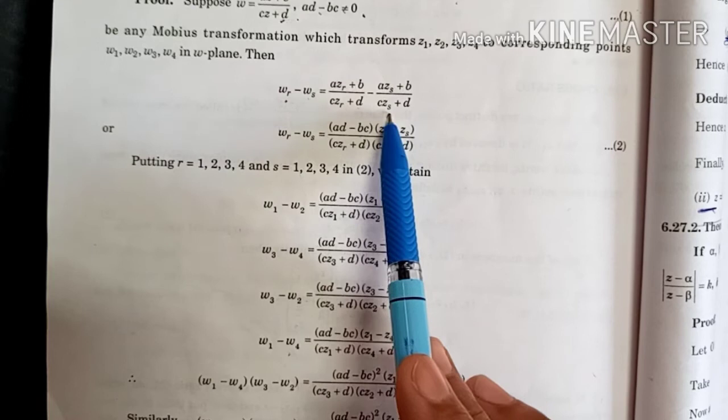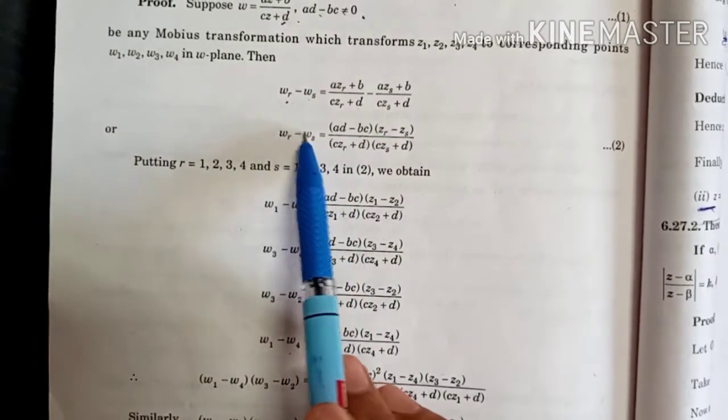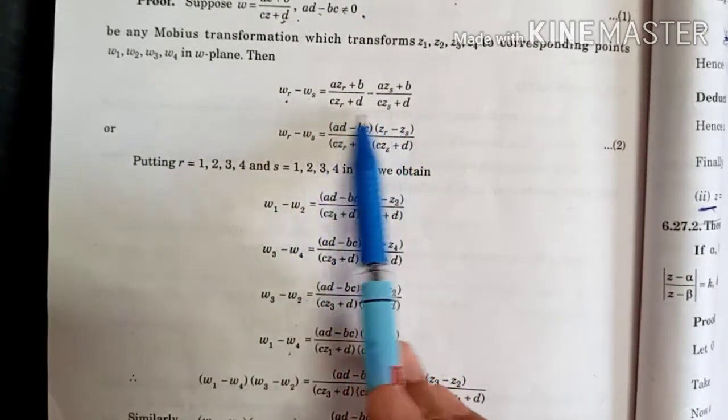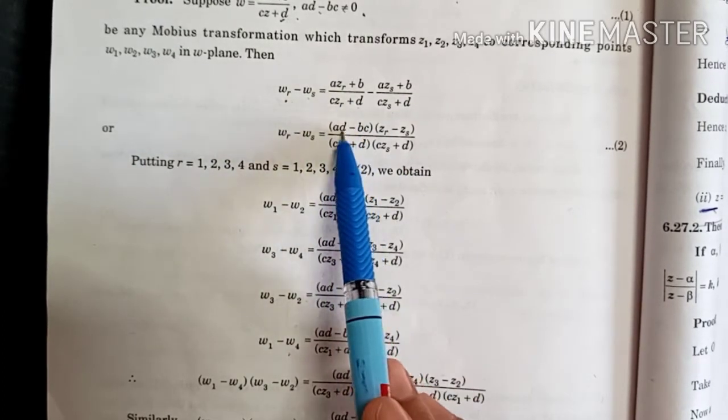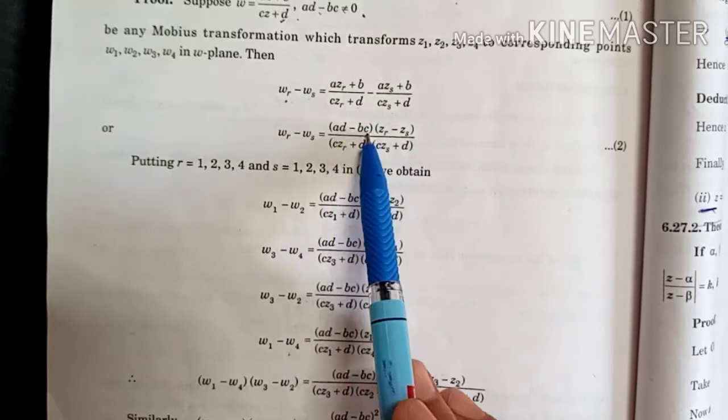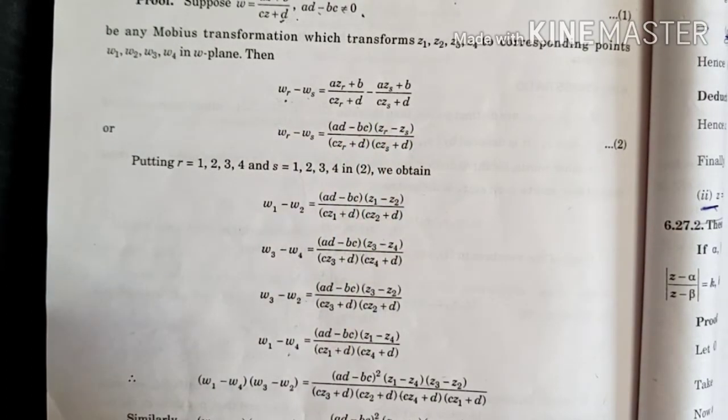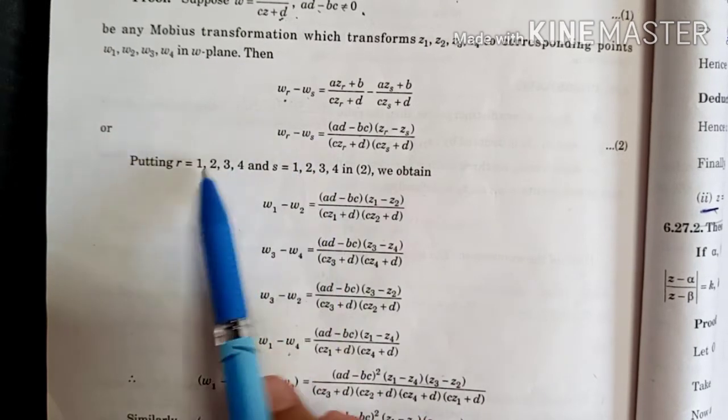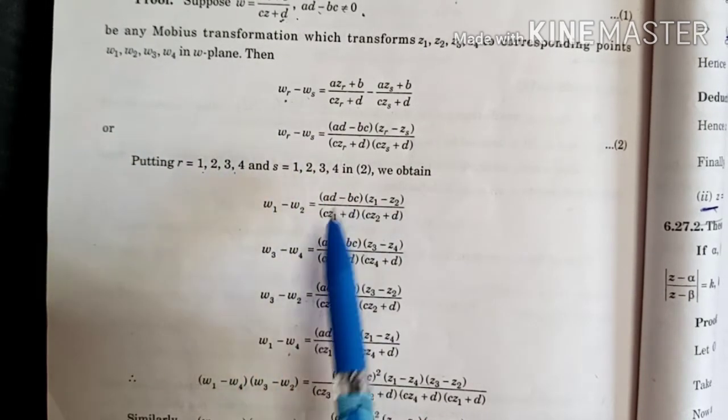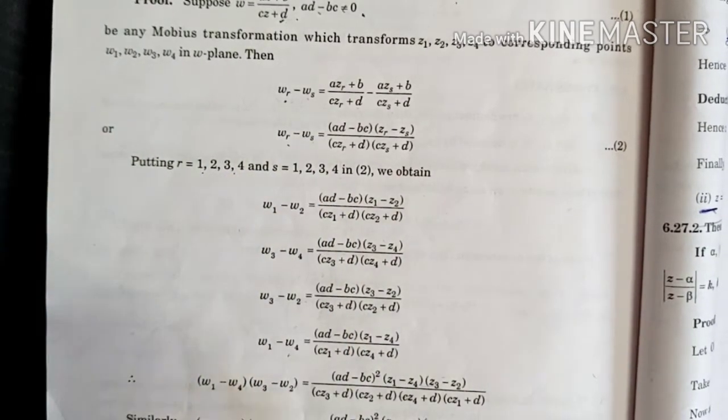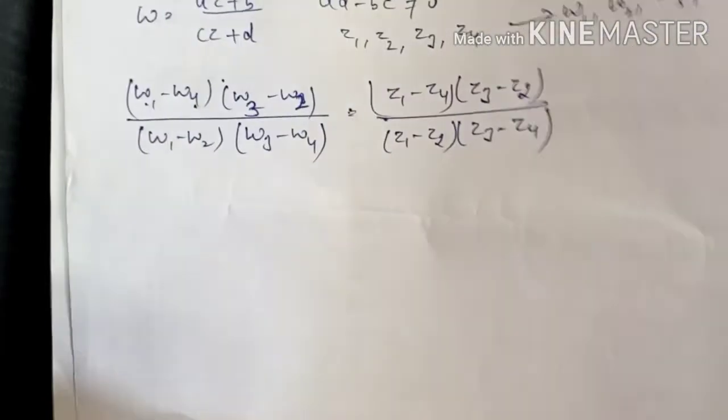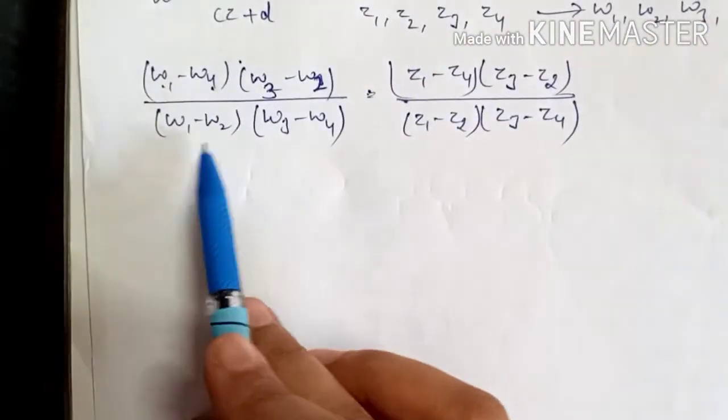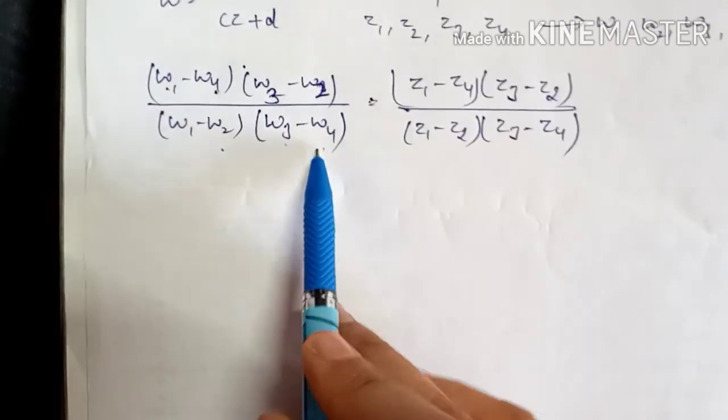Put values 1, 2, 3, 4. On the left side of the proof, we need W1 minus W4, W3 minus W2, W1 minus W2, and W3 minus W4.